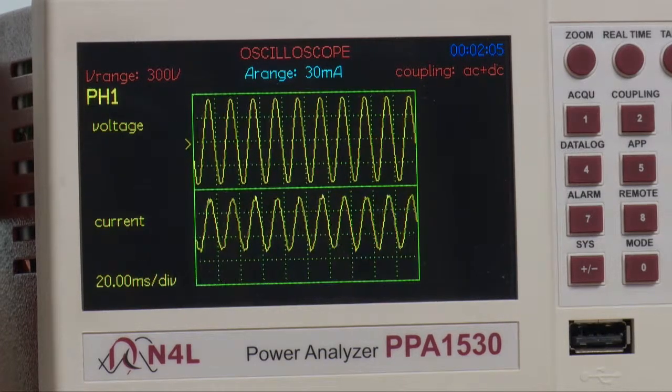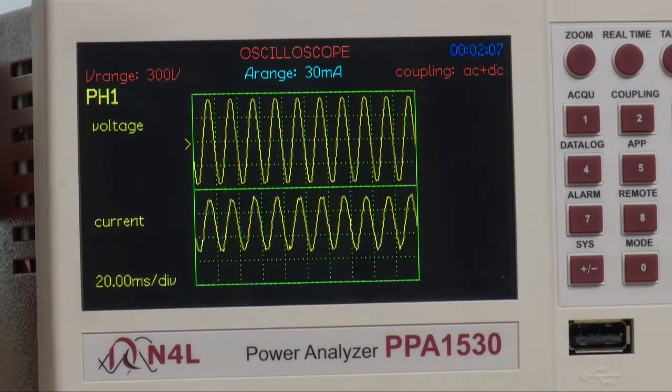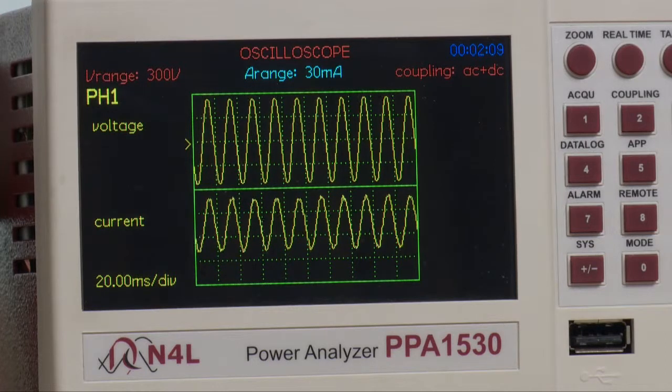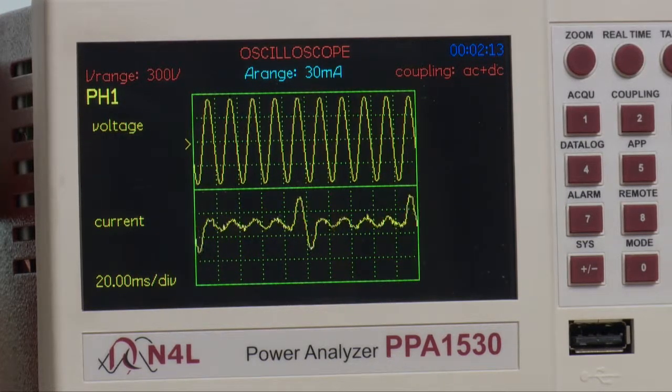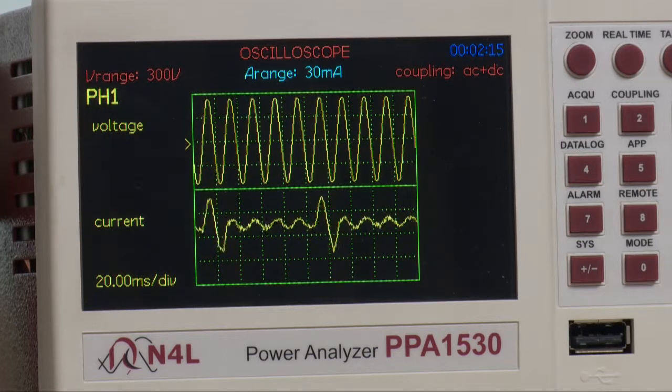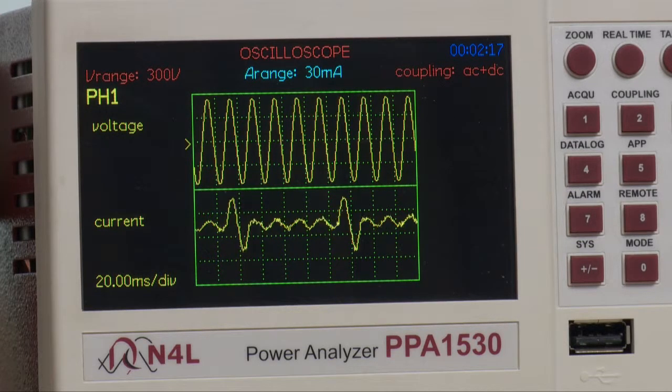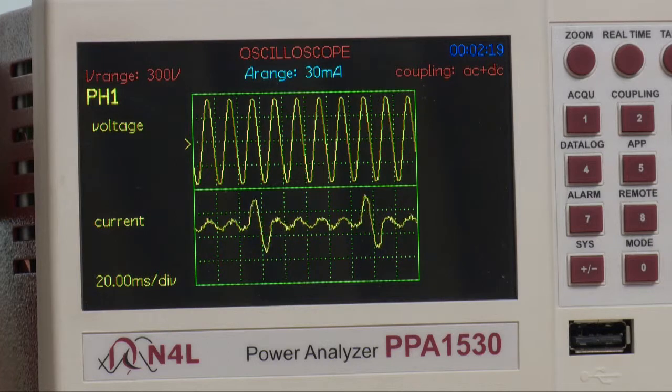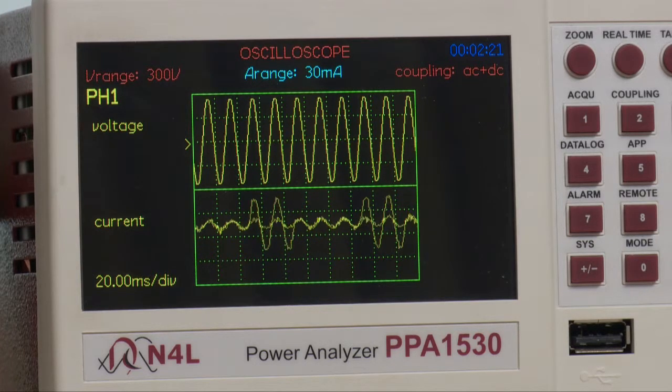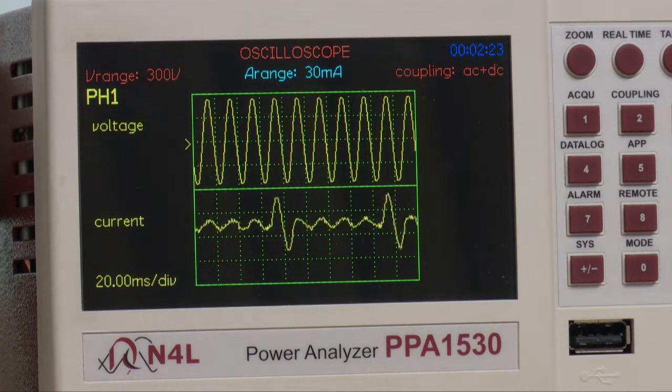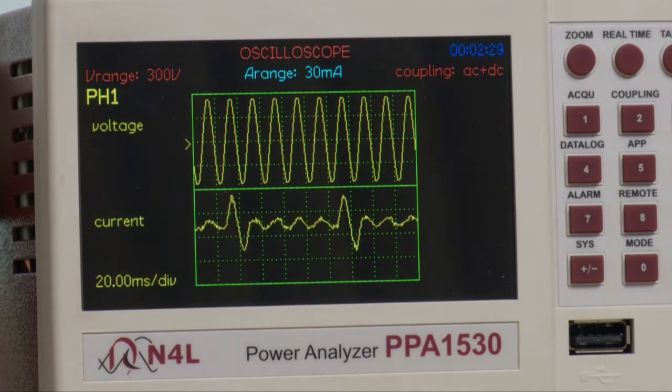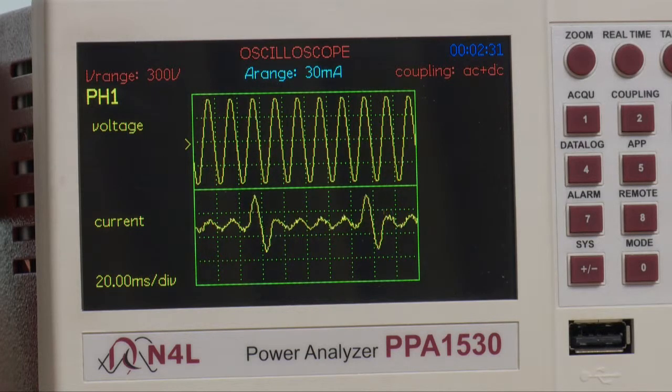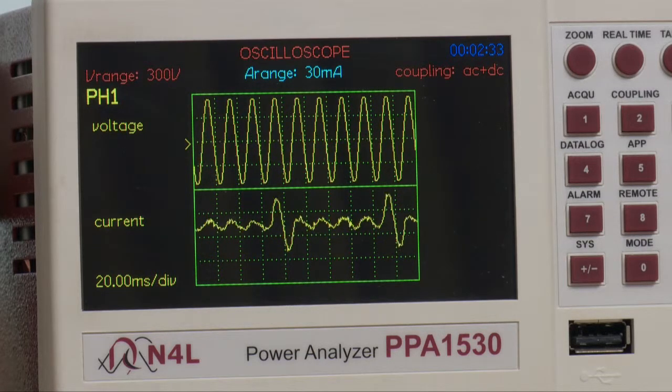If we now go back to the oscilloscope mode, we want to illustrate a particular problem associated with standby power, and that is the low-duty cycle pulses of current. This is where a standby power supply will take a trickle current, followed by periodic pulses of current, to charge the input stage during standby mode. This is a particular problem for power analyzers because it causes a problem for frequency detection and ranging, and the power will tend to pulse.